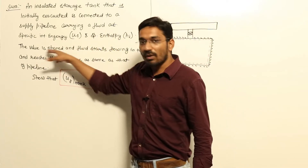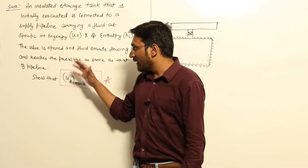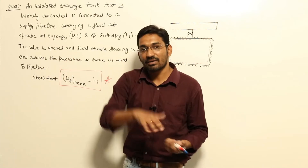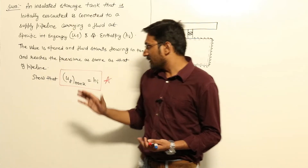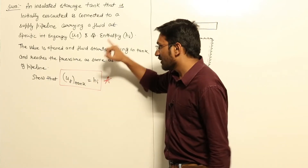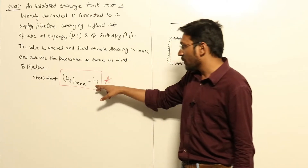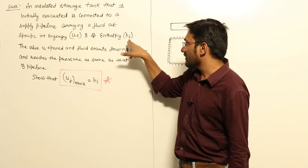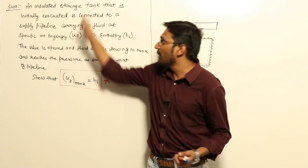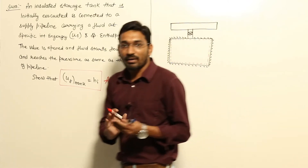The valve is opened and fluid starts flowing into the tank until the pressure in the tank equals that of the pipeline. We have to show that the final specific internal energy of the tank is equal to hi, which is the specific enthalpy of the fluid flowing through the pipeline.